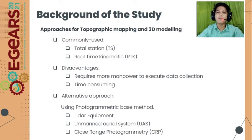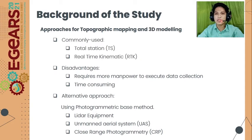There are some approaches commonly used in implementing topographic surveys, such as the use of total station, real-time kinematic using GNSS, etc. These approaches are often difficult to implement because they require more manpower to execute the data collection of the site and are also time-consuming. An alternative is the use of photogrammetric-based methods like LIDAR equipment, but this method is expensive to use. Another approach is unmanned aerial system, which is also expensive.